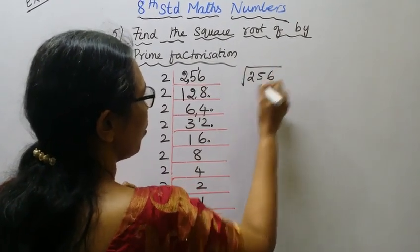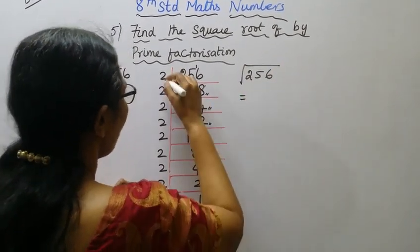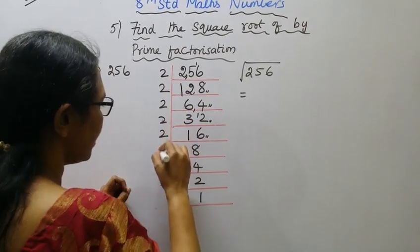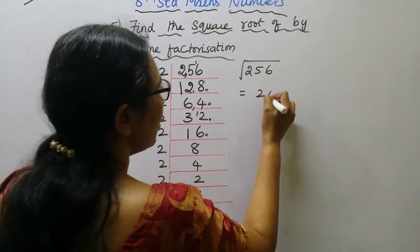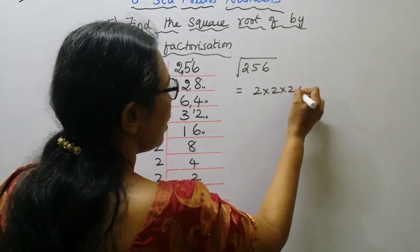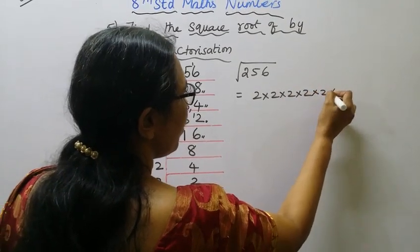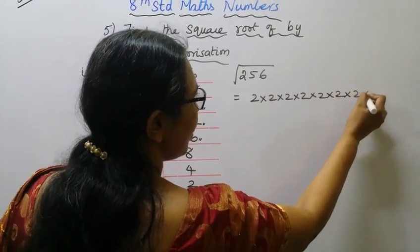Now count the 2's: 1, 2, 3, 4, 5, 6, 7, 8. We have eight 2's total.